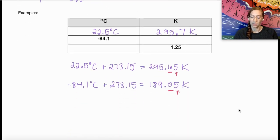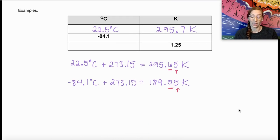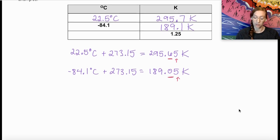Same as before, I have one decimal place in my Celsius value of temperature. That means I'm going to want to round my answer I get in the calculator from 189.05 up to 189.1. We can see this very clearly. We went from a negative Celsius temperature into a positive Kelvin temperature.